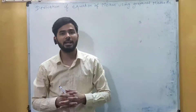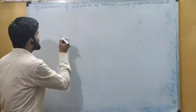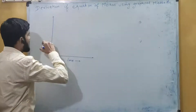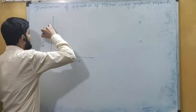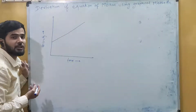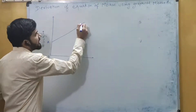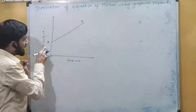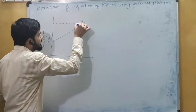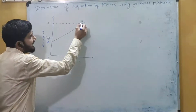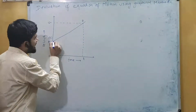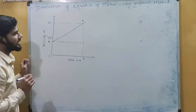Now we will derive the equations of motion using graphical method. Let us draw a v-t graph with time on the x-axis and velocity on the y-axis. We draw a straight line representing uniform motion. Point A and point B are on this line. At point A the velocity is v₁, at point B the velocity is v₂, and the time at point B is t.